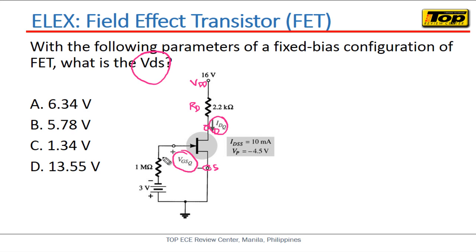VGSQ and IDQ are the components that is used to get the quiescent point or the Q point. We have also the RG and we have the VGG. And we also have the IDSS - this is the saturated current for the ID which is 10 milliampere, and we have the pinch-off voltage of negative 4.5 volts.